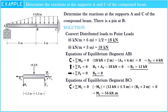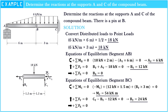The sum of forces along the Y-axis equals 0: CY minus BY minus 12 kN equals 0. Hence, CY equals 24 kN. The sum of forces along the X-axis equals 0: CX minus BX equals 0. Hence, CX equals 0.